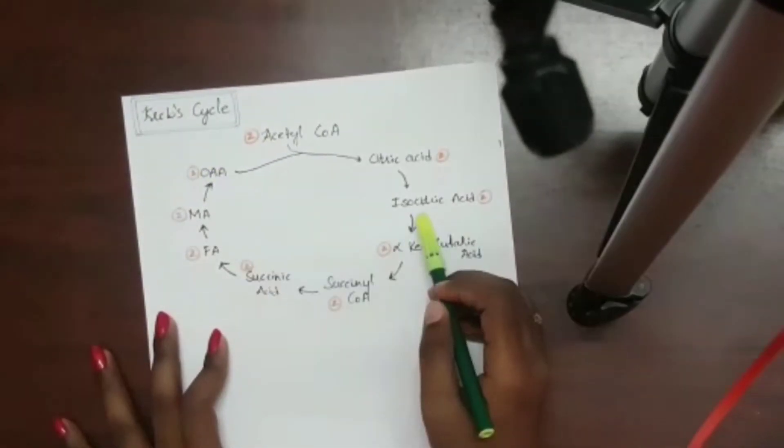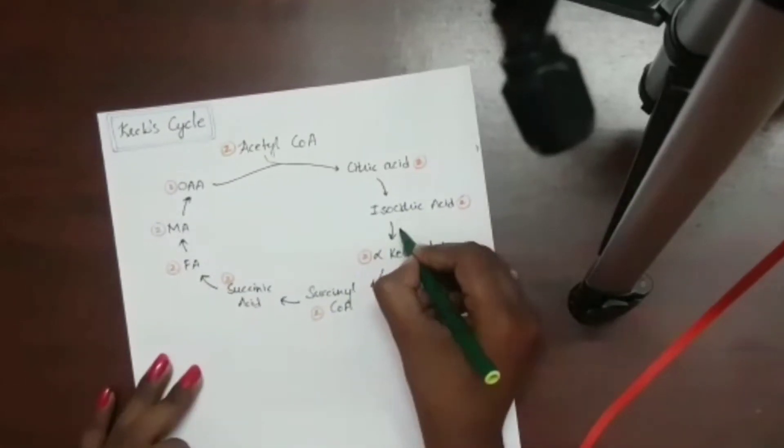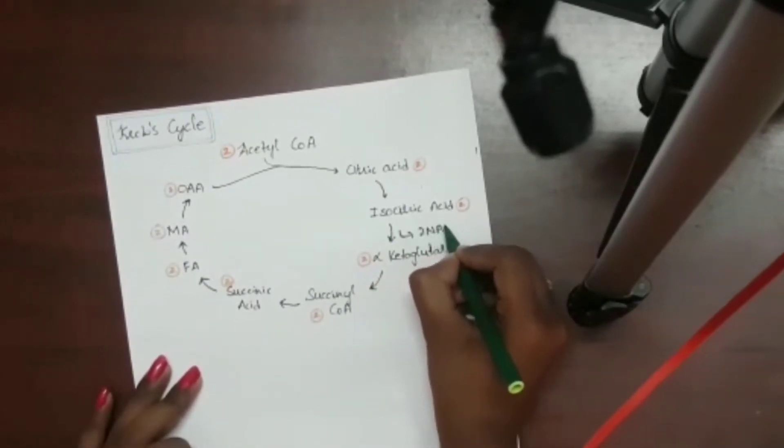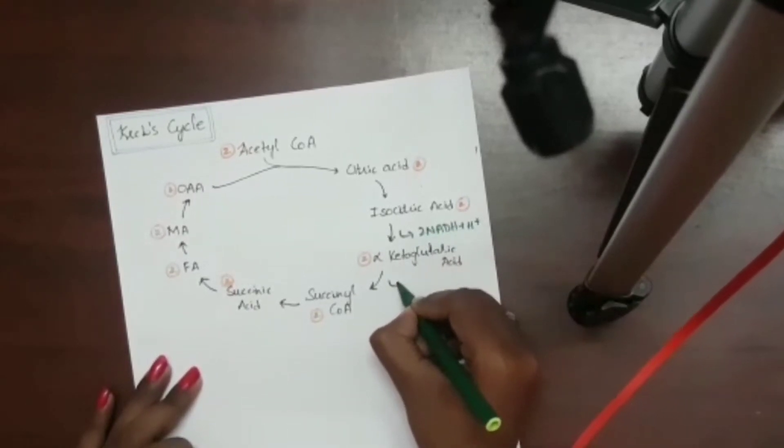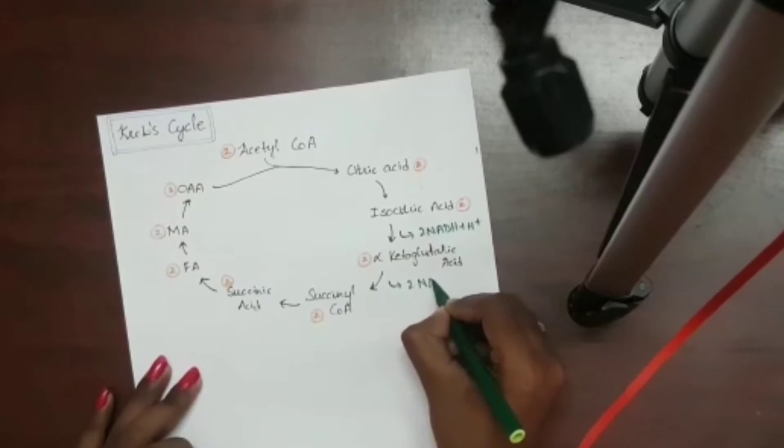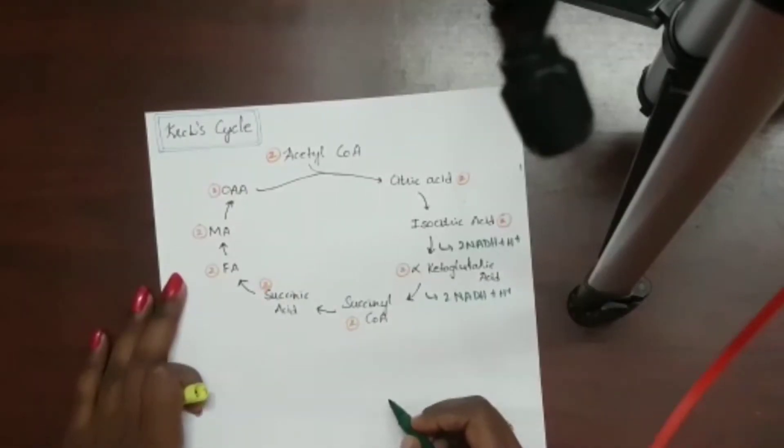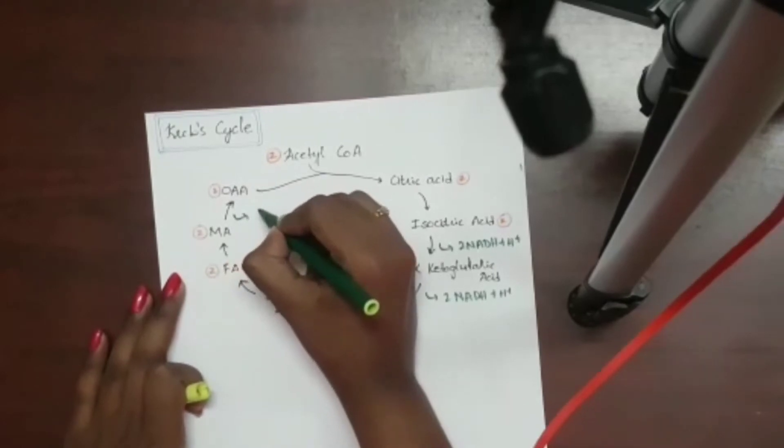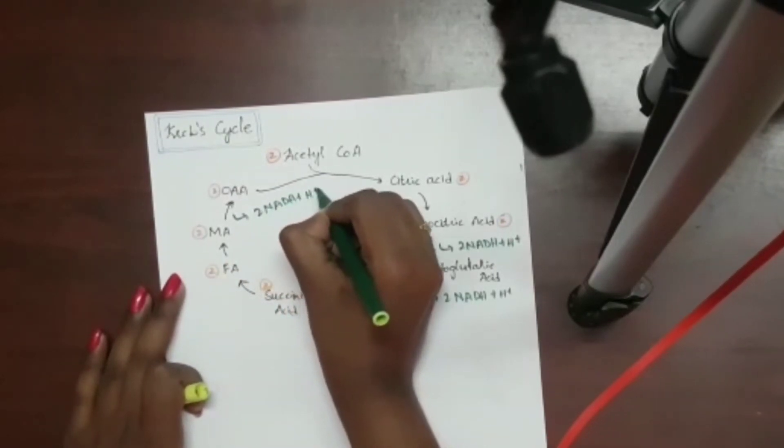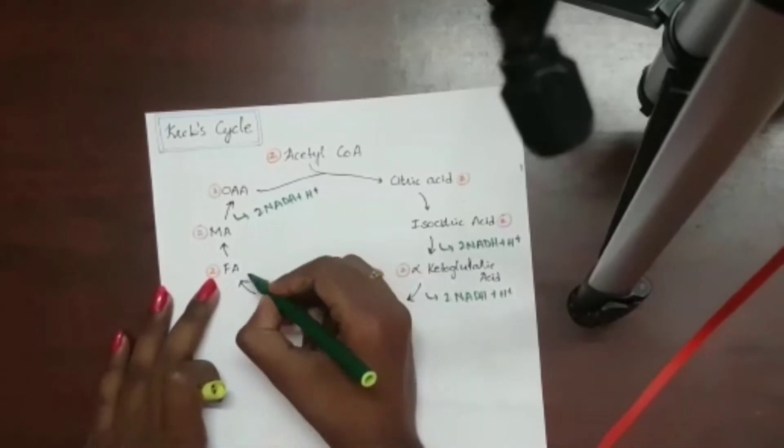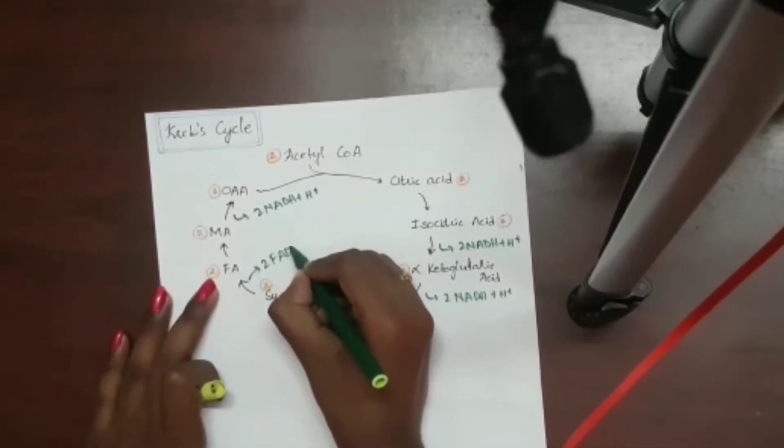Now, coming to the Krebs cycle, oxidative decarboxylation occurs here and here. So 2 NADH++, H+ are released in these two steps. Other 2 NADH++, H+ are released in this step. From succinic acid to fumaric acid, there is release of 2 FADH2.